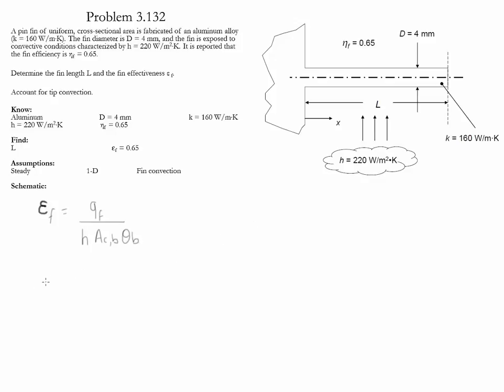Notice that we have that the heat rate of the fin is equal to m, hyperbolic tangent of lowercase m LC. We also know that the value of m is equal to square root of h p k, the cross-sectional area, times theta b.